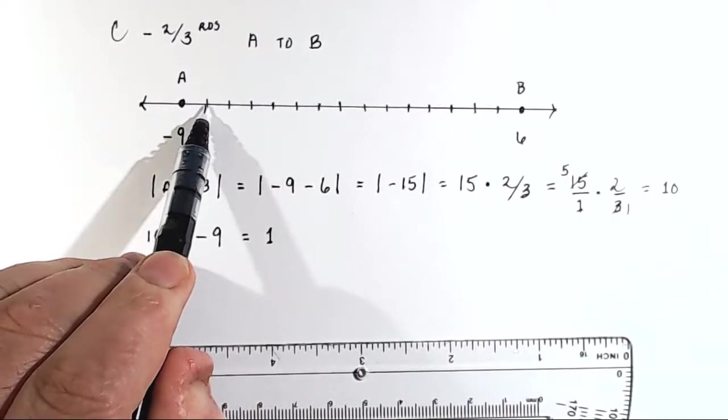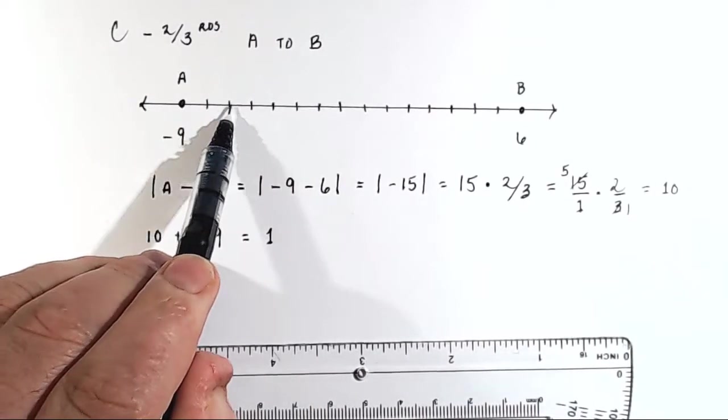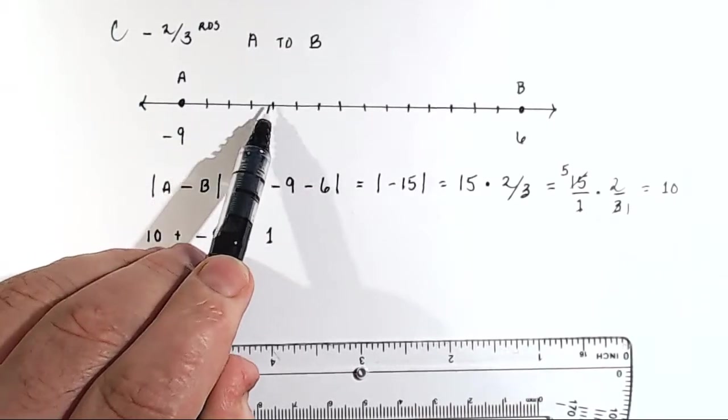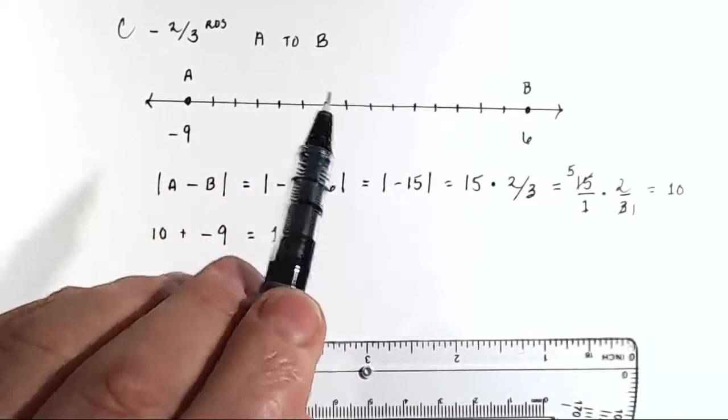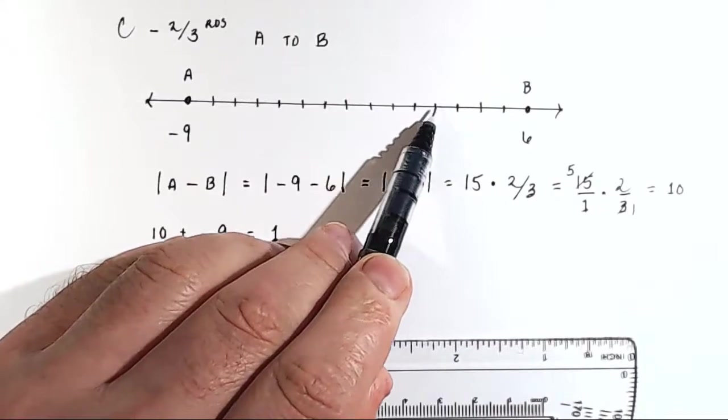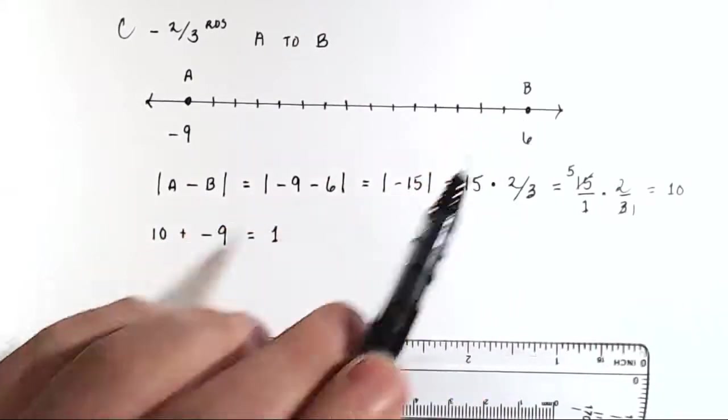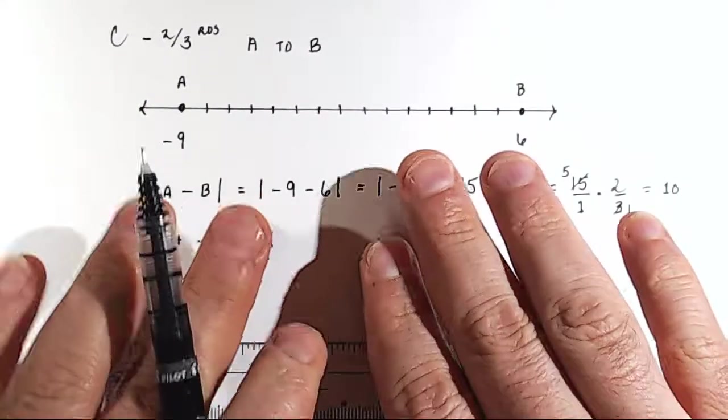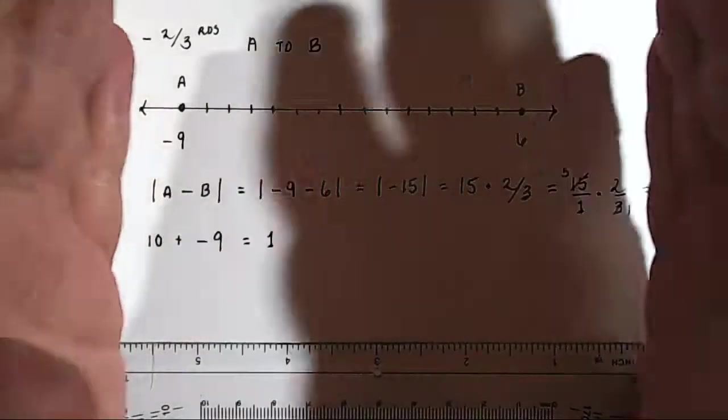Let's double check to make sure that we actually have this 15 distance. So starting at negative 9, I have negative 8. So that's 1, 2, 3, 4, 5, 6, 7, 8, 9, 10, 11, 12, 13, 14, 15. Good. So there's 15 spaces in between these two numbers.